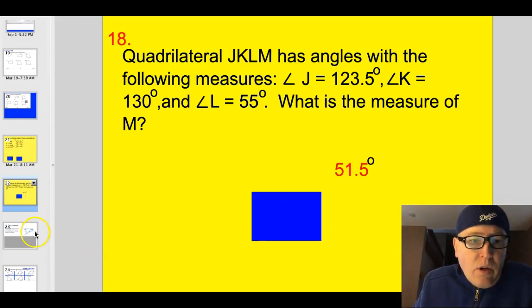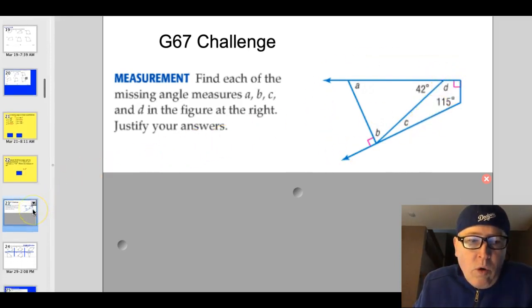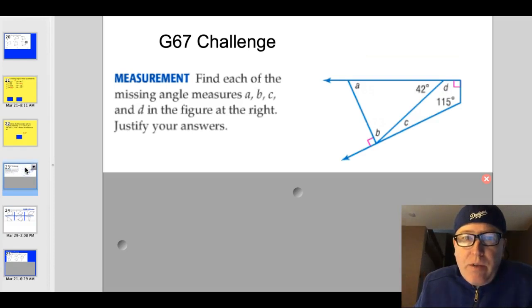All right. I think you are ready for the challenge or the six blocker. I'll let you take a look at both and decide which one. Here's the challenge. The challenge is to find each of the missing angles for A, B, C, and D in this shape right here. Or you can do the six blocker right here. Okay. I'll go back and give you time to freeze the screen on either of them.